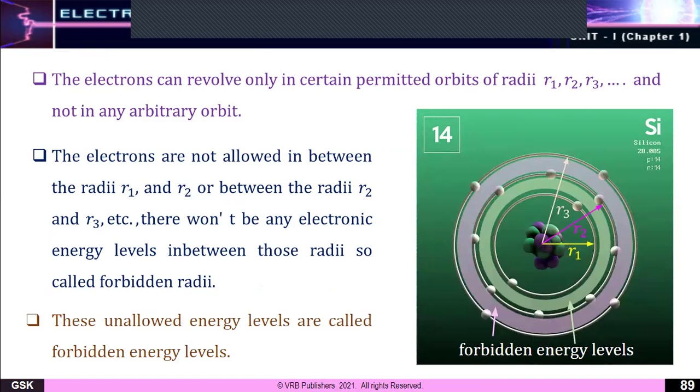Not in arbitrary orbits. These electrons are not allowed between the radii R₁ and R₂, or between R₂ and R₃. There won't be any electronic energy levels between these radii, so they are called forbidden radii. This band is called the forbidden band.